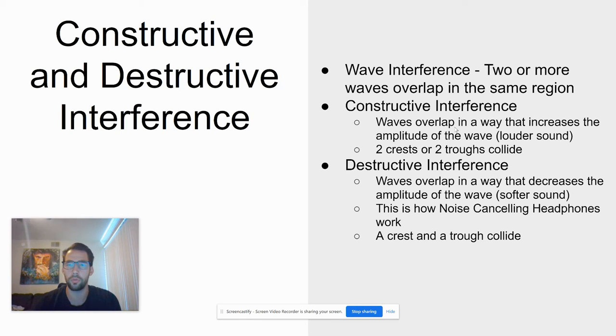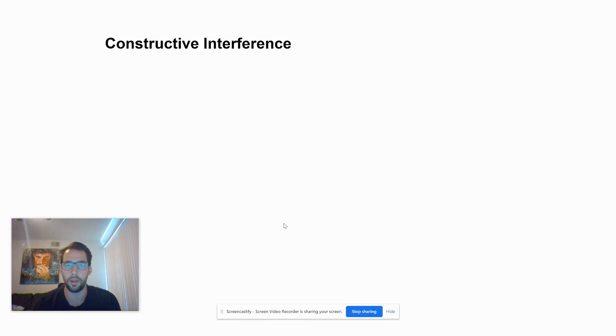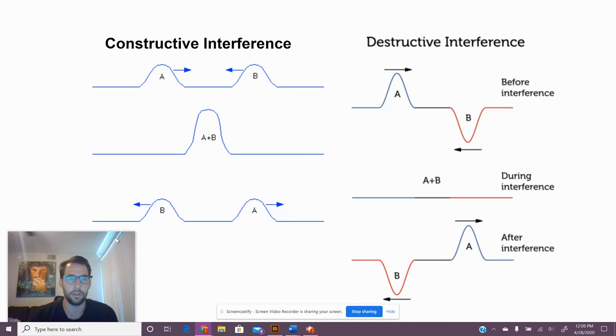So with constructive interference, when we're talking about sound, it's going to produce a louder sound, and with destructive interference, it's going to produce a softer sound. Here's a visual of what that looks like.